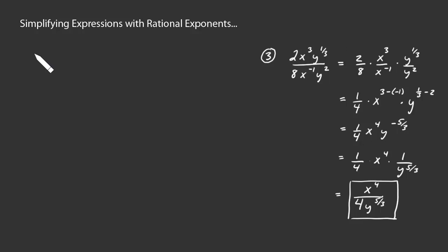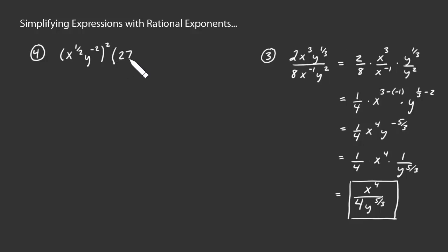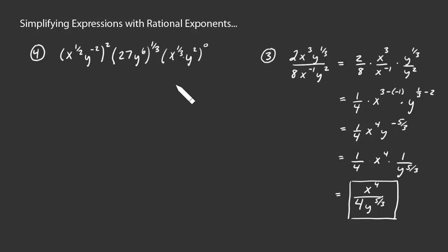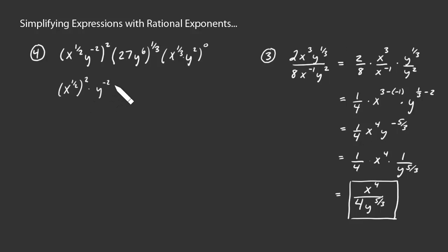For example 4, we have x to the 1 half times y to the negative 2, all raised to the second power, times 27y to the sixth all to the 1 third, times x to the 1 third times y squared all to the zero power. Looking at each of these three big factors: the first is a product raised to a power, so we distribute that exponent to get x to the 1 half squared times y to the negative 2 squared.